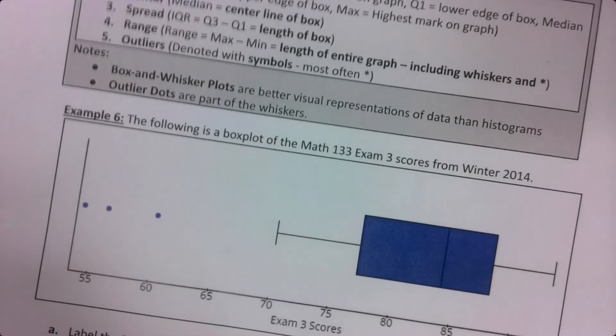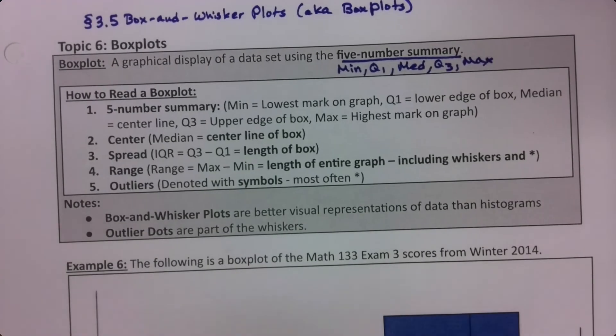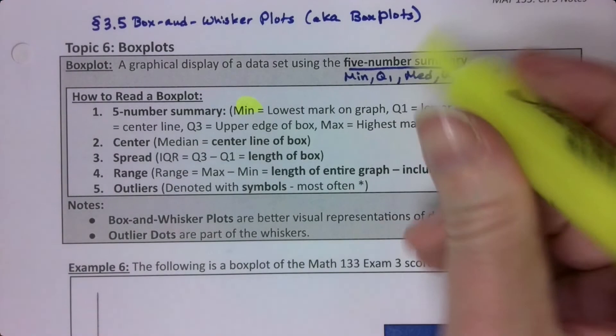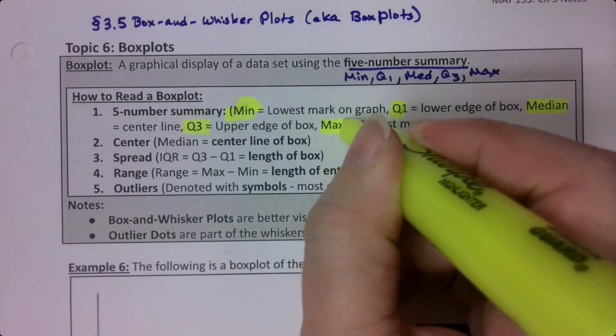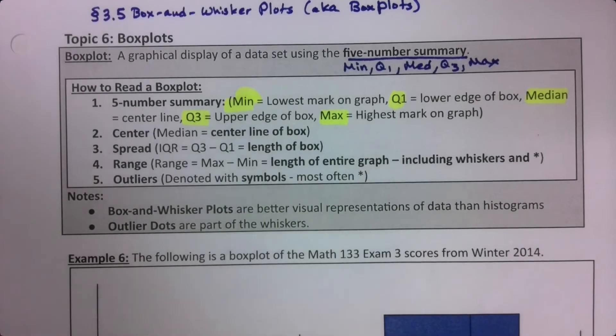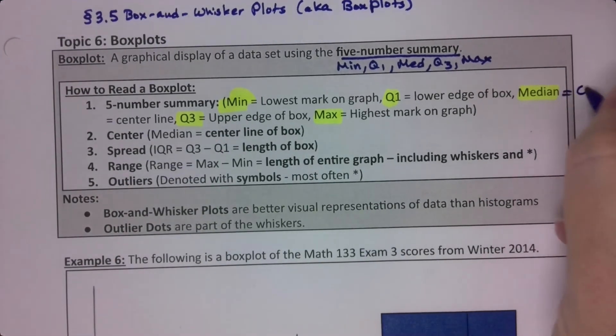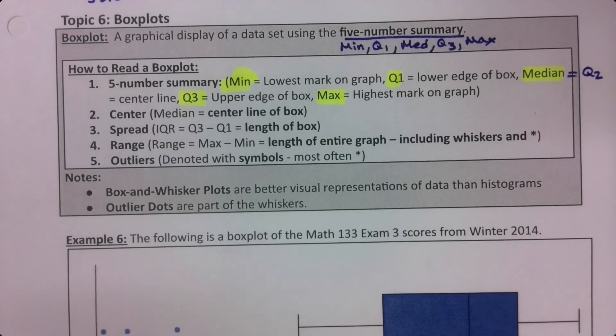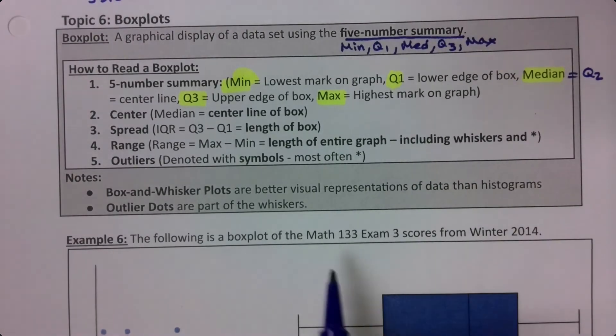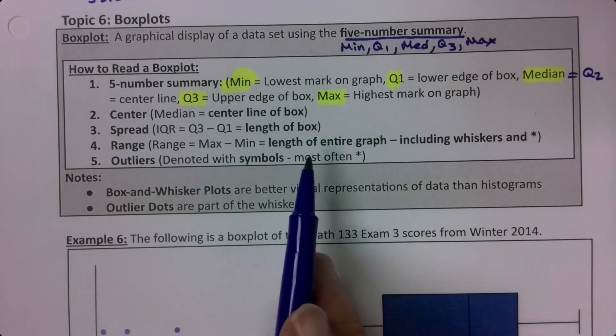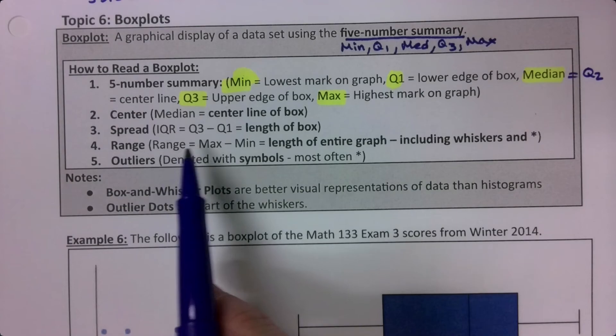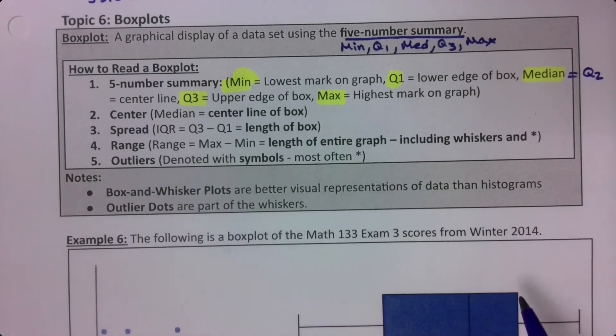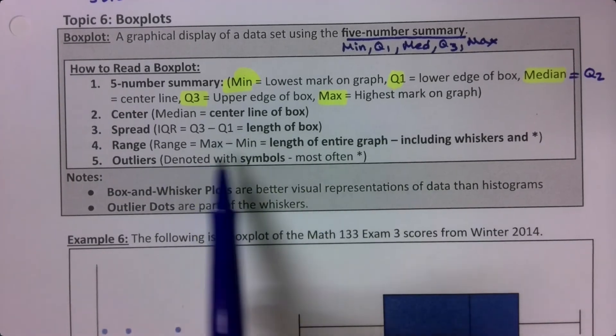Min, Q1, Median which is also known as Q2—some students forget sometimes that that's Q2, but it is. The median goes in the center line of the box. Q1 to Q3 is the length of the box. The IQR is that length. The range is from the min all the way up to the max, and any outliers are denoted with symbols.